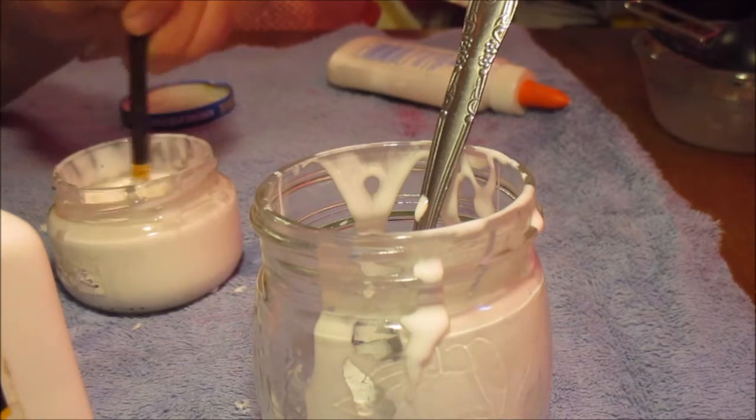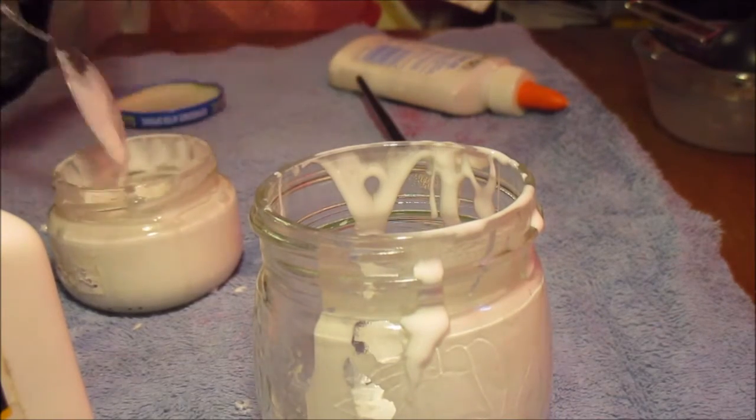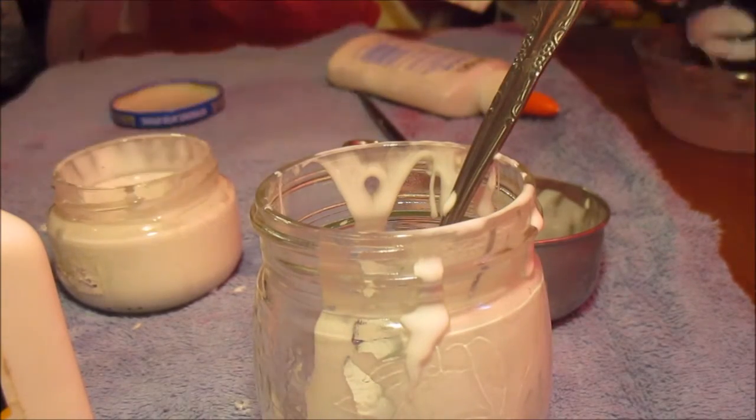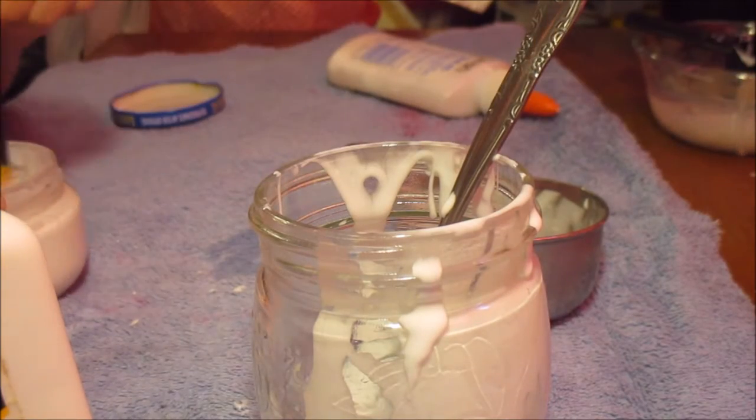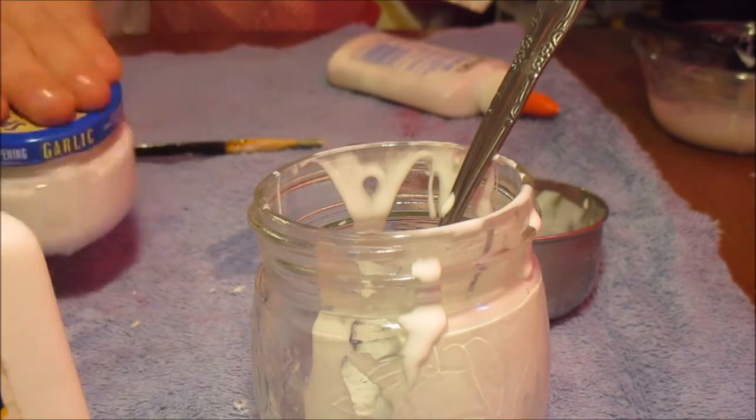After you do that, just stir it up. I used a paintbrush to stir it up and then I used a spoon to stir it up, and then I put the lid on top and I shook it up just to make sure that it was fine, and it was. So yeah, that's how you make mod podge.